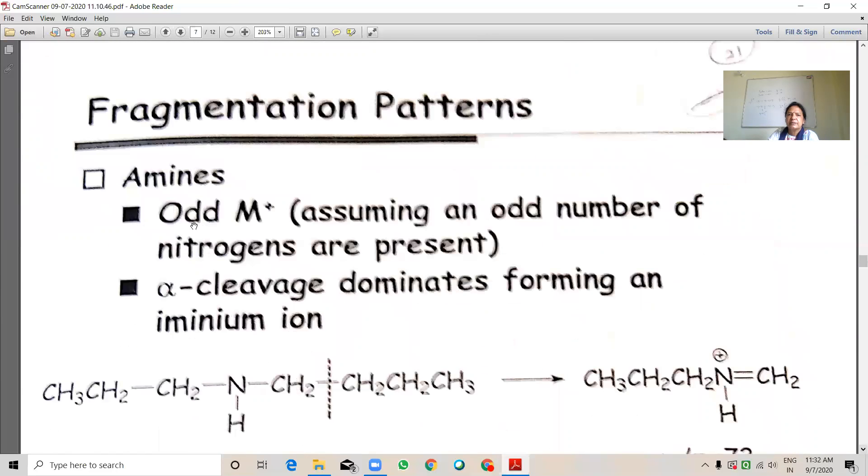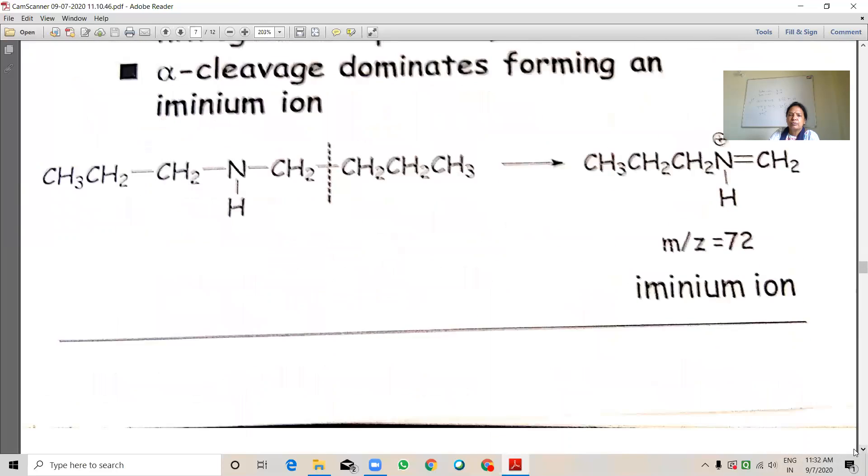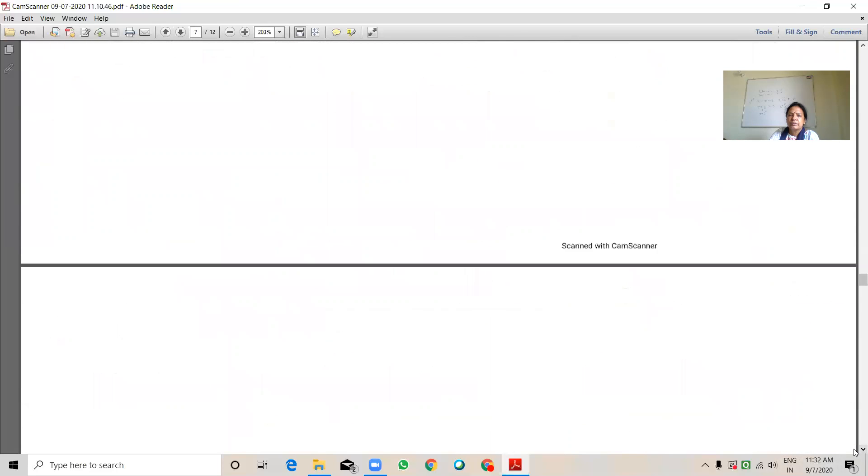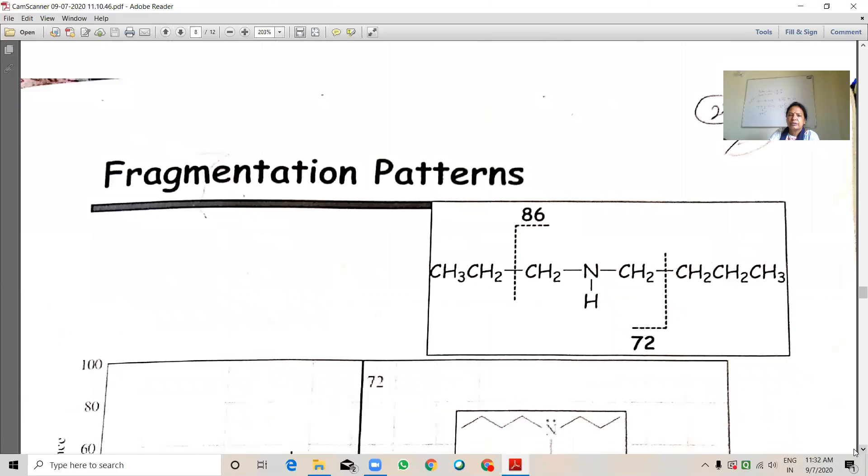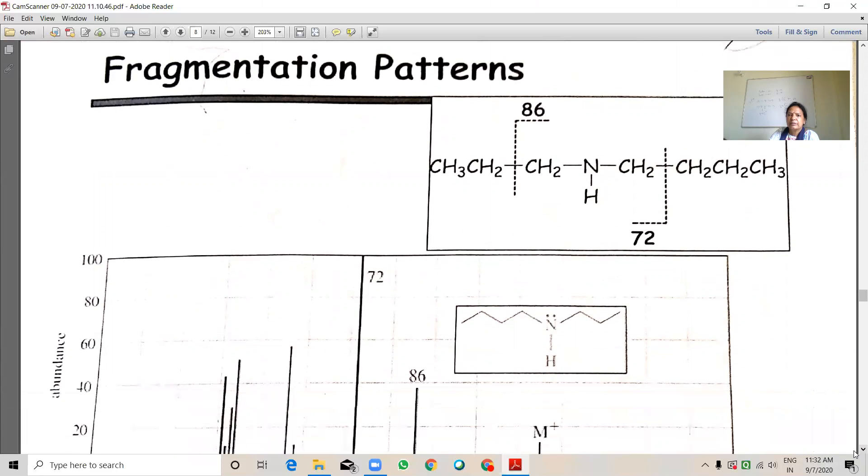Amines. Fragmentation of amines. We can see here, ether. Hexamine, aminium ion at 72. This is observed in amines.